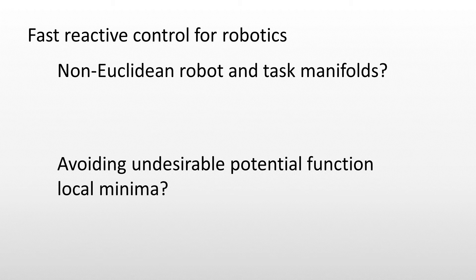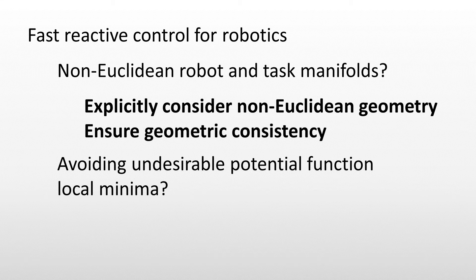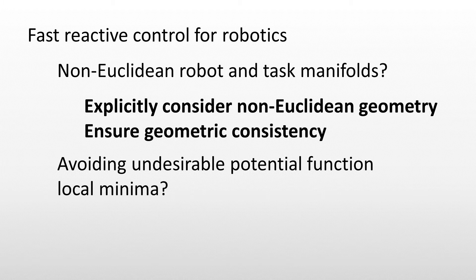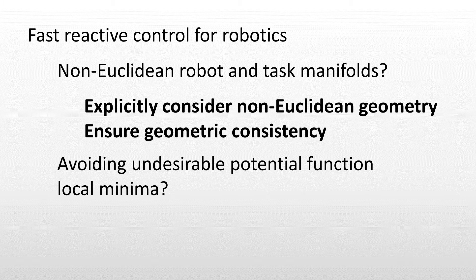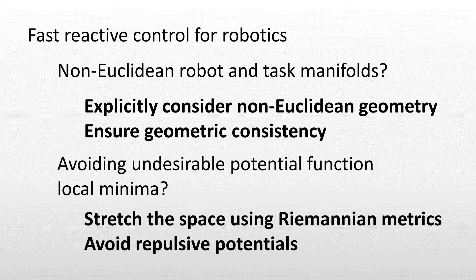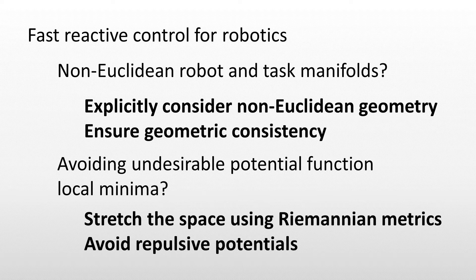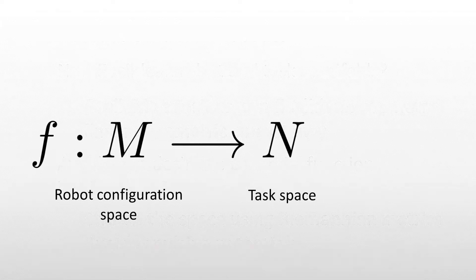We solved the first of these issues by explicitly considering non-Euclidean robot and task manifolds, and by ensuring that our policy generation framework is geometrically consistent. We solved the second issue by avoiding repulsive potentials for constraints, instead enforcing constraints by curving this space using carefully designed Riemannian metrics.